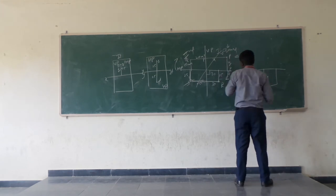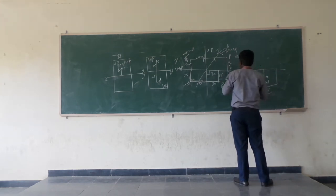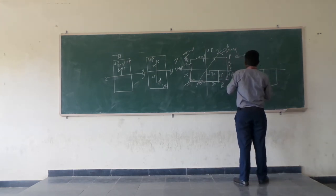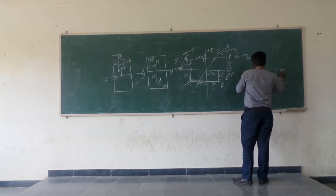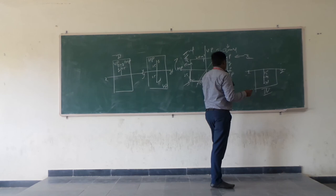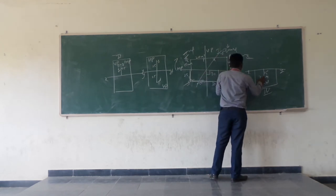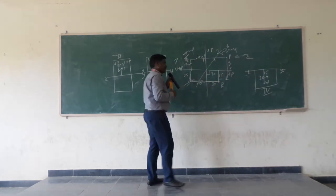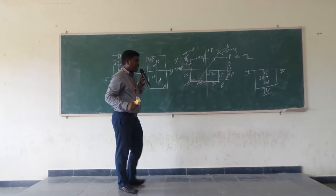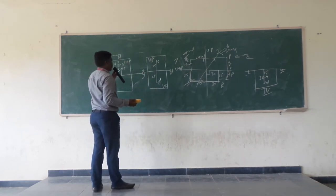Now you draw the solution: the top view is 15 mm from the XY line, and the front view is 30 mm from the XY line, in the fourth quadrant. So all these four quadrants will be drawn for the projection of points.